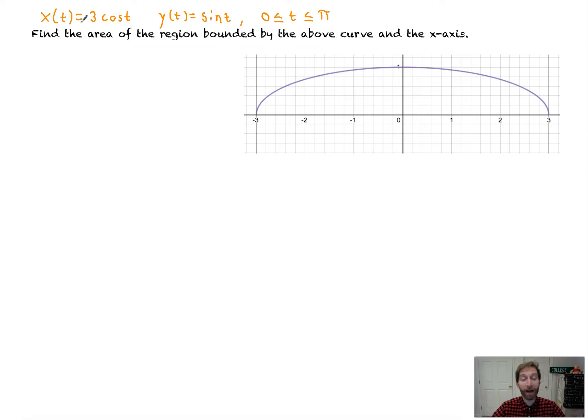I've given you that x(t) is 3cos(t) and y(t) is sin(t). This is the curve - what x(t), y(t) looks like. We're asked to find the area of the region bounded by this curve and the x-axis. So we're talking about this area right in here. If we take one representative rectangle, we're going to be adding lots of rectangles with width dx and height y.